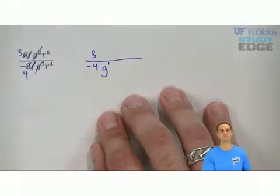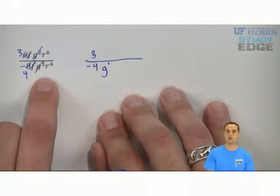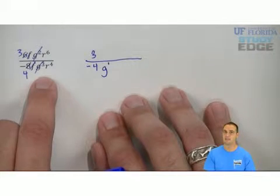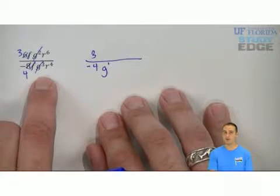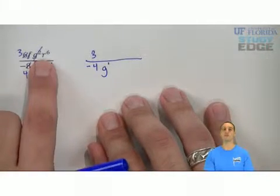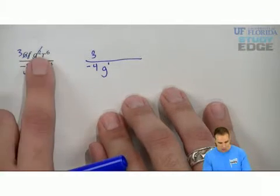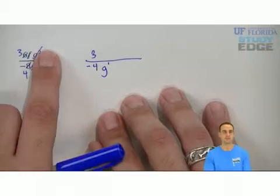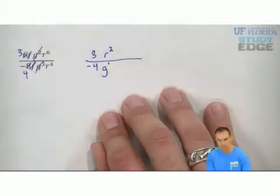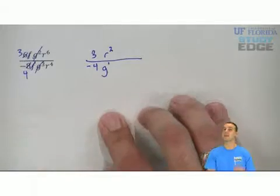R to the sixth over R to the fourth. Again, I'm going to subtract, and where do I have more of? I have more on the numerator, so the answer will be in the numerator for R. R to the sixth, R to the fourth, six minus four is two, and I'll leave you R squared in the numerator.